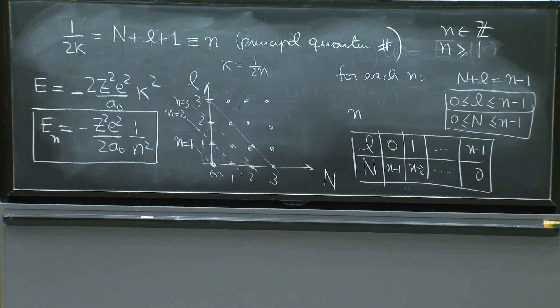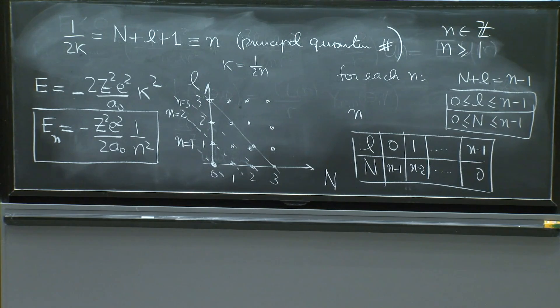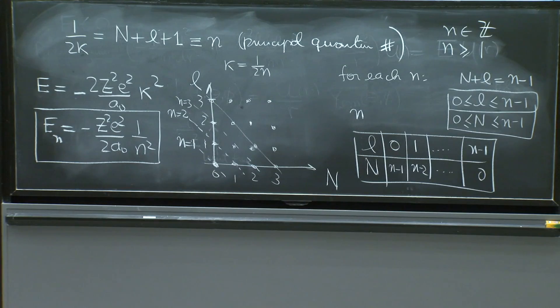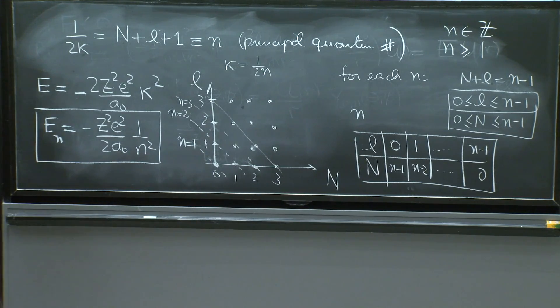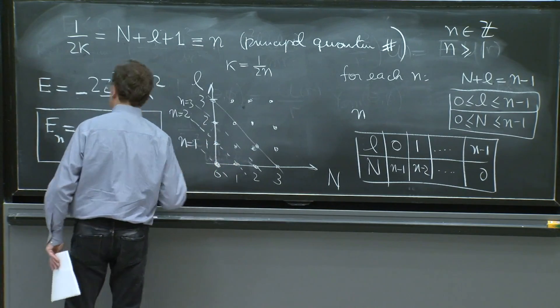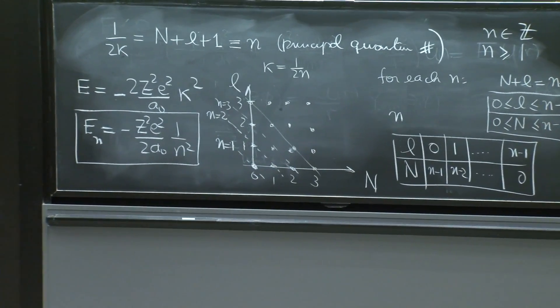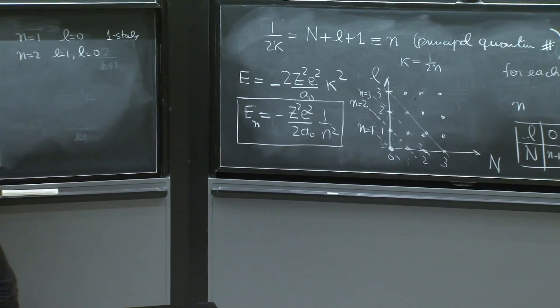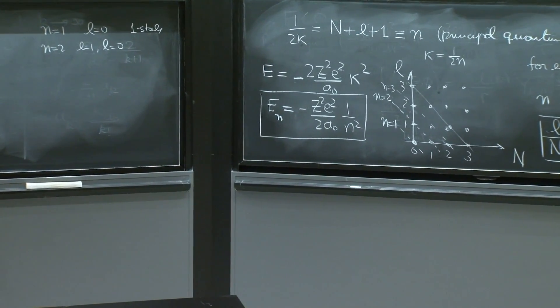And capital N is equal to 0 as well. And that's one state for n equals to 2. What can you have? n equals to 2. You could have l equals 1 or l equals 0. So l equals 1 or l equals 0. And how many states do we have here?